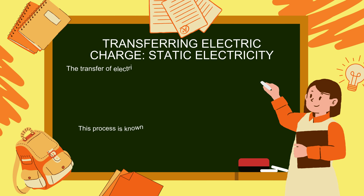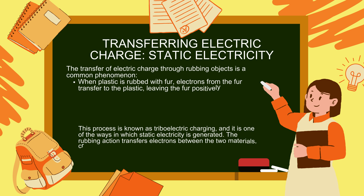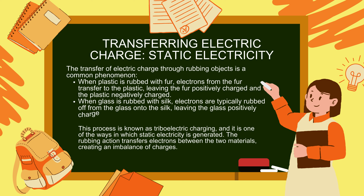Transferring electric charge — static electricity: the transfer of electric charge through rubbing objects is a common phenomenon. When plastic is rubbed with fur, electrons from the fur transfer to the plastic, leaving the fur positively charged and the plastic negatively charged. When glass is rubbed with silk, electrons are rubbed off from the glass onto the silk, leaving the glass positively charged and the silk negatively charged. This process is known as triboelectric charging, and the rubbing action transfers electrons between the two materials, creating an imbalance of charges.